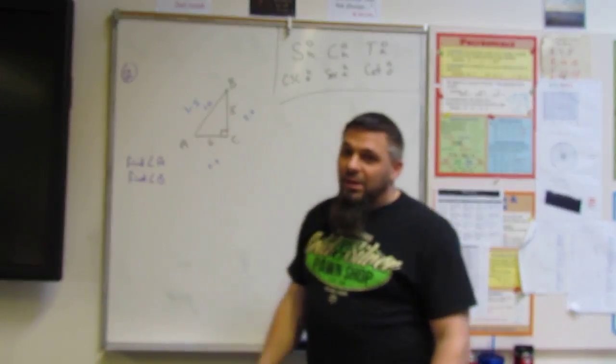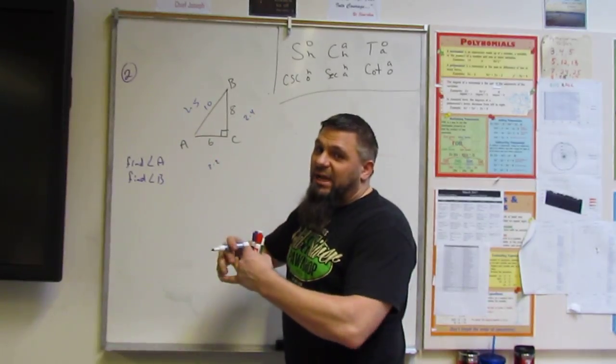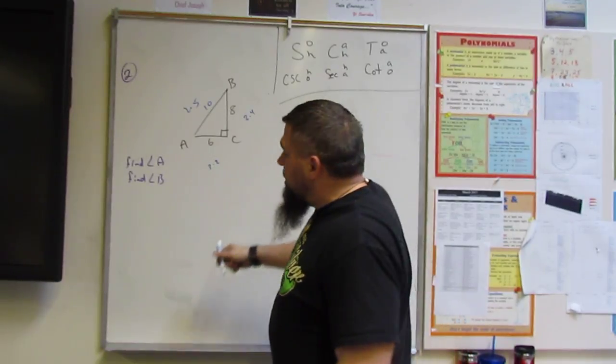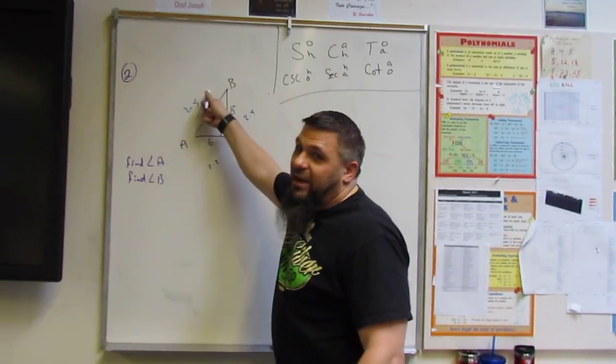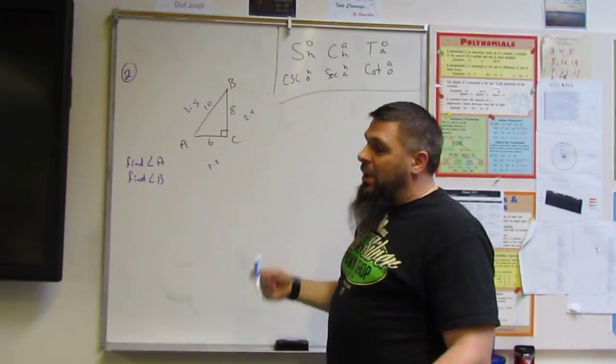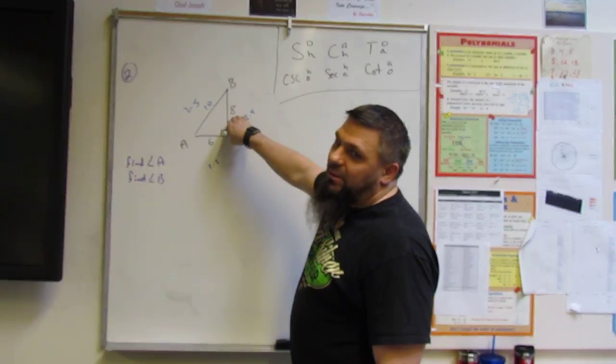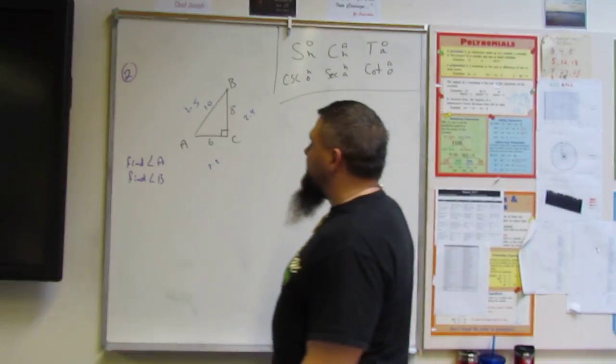So we know this is a three, four, five triangle multiplied twice, dilated, just made bigger. Okay? So three, four, two times three, two times four, three times five. Simple. If we would have done the math, we would have said six squared plus eight squared is 100. Square rooted is 10. Moving on.